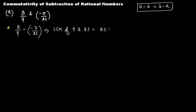The LCM of 9 and 81 will be 81. Now let's make these two rational numbers into like rational numbers. The denominator becomes 81. Since 81 divided by 9 gives us 9 — wait, that gives us 9 — so the numerator becomes 8 times 9.